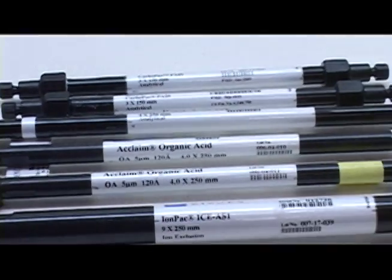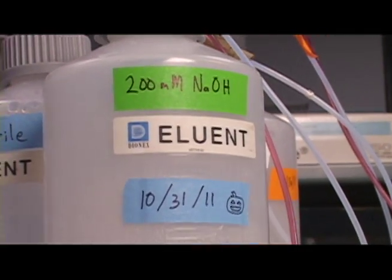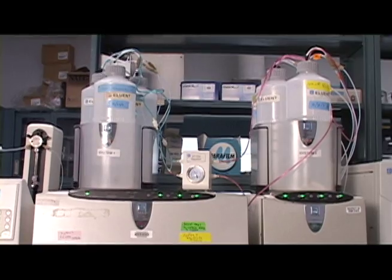There are many types of detectors and columns in use and many different eluents used to carry the samples through the column and to the detector. These items are selected specifically for the compounds of interest.